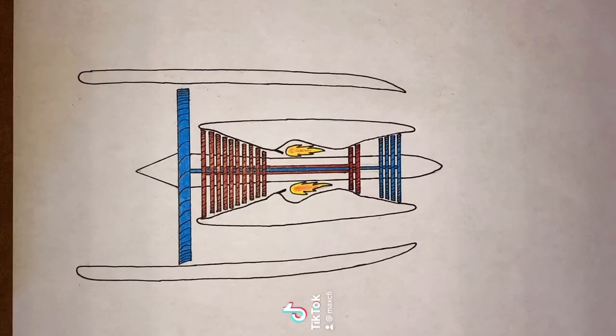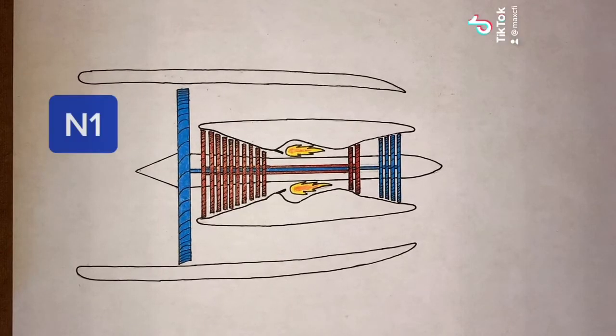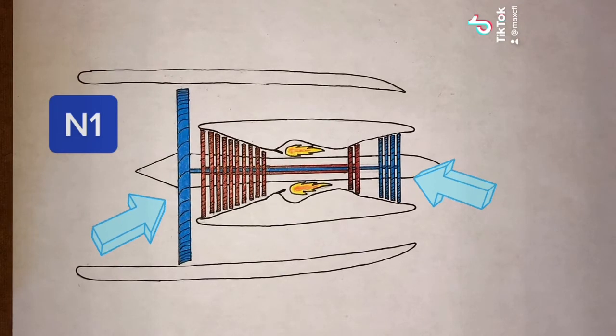On many jet engines, the primary indication used to set thrust is the N1 speed. This is the rotation rate of the fan at the front, and some of the turbines at the back, and, depending on the engine, possibly part of the compressor as well. In this drawing, it's the blue spool.